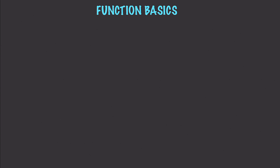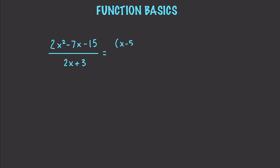Now let's say we want to divide functions. Taking 2x squared minus 7x minus 15 over 2x plus 3 — we've talked about factoring in previous videos — we can factor the top into (x minus 5)(2x plus 3). The 2x plus 3 on the bottom cancels out, simplifying down to x minus 5.